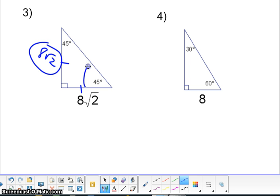And then from leg to hypotenuse is always multiplied. Whatever that side is, is going to be multiplied by a radical 2. So you end up with 8 times 2, which is 16. So the hypotenuse length is going to be 16.